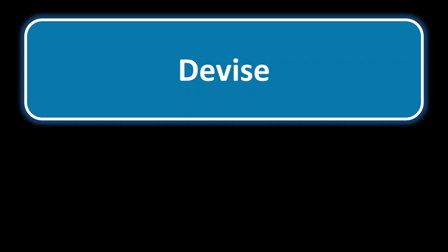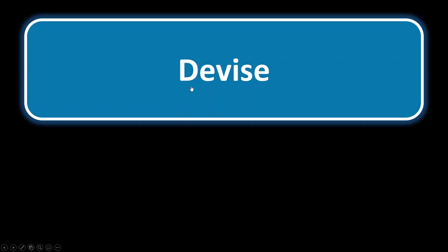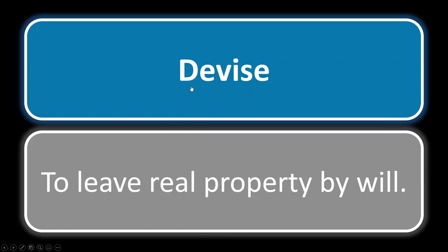Devise. You should automatically be thinking of a will — to will a property. Devise means to leave real property by will. When we're talking about freehold estates, especially fee simple estates, they are in a state of inheritance and have the ability to devise property — that is, to leave it to your heirs by will.